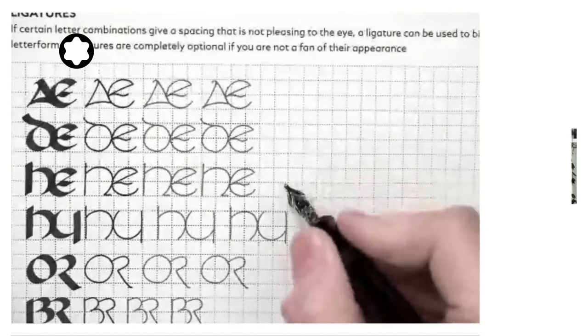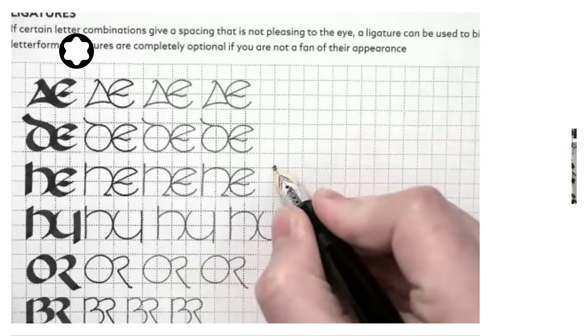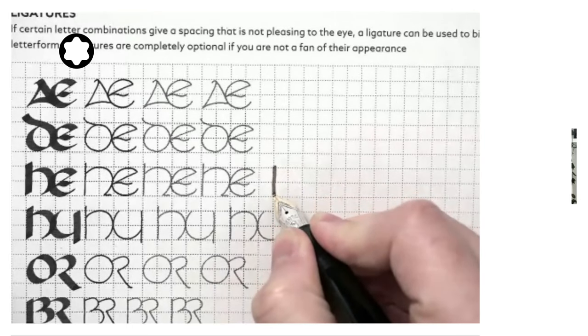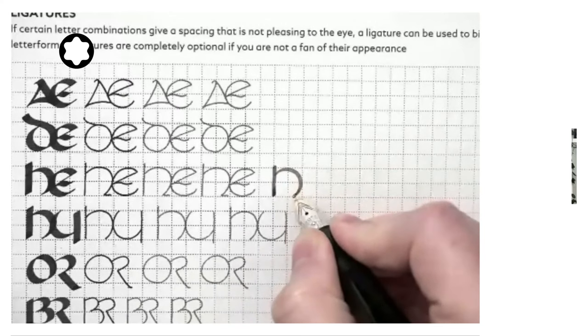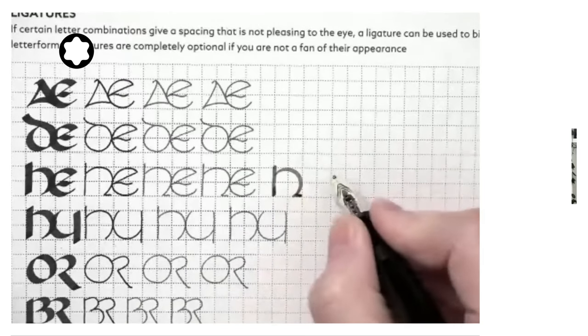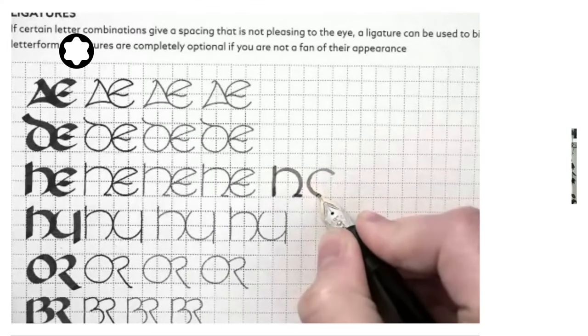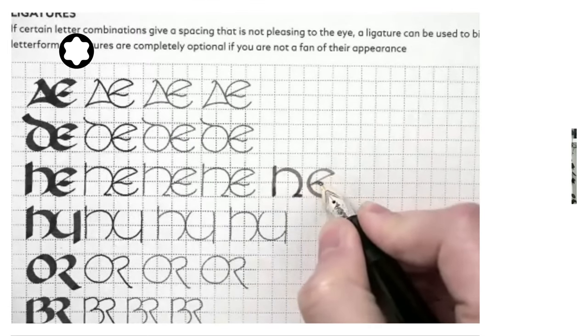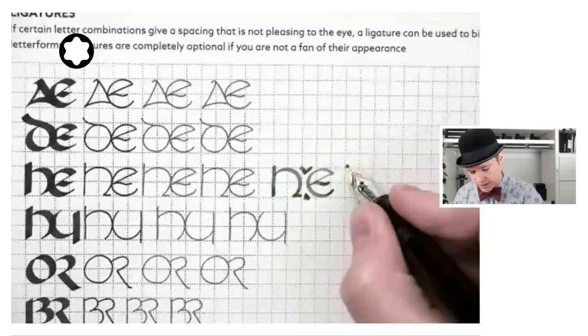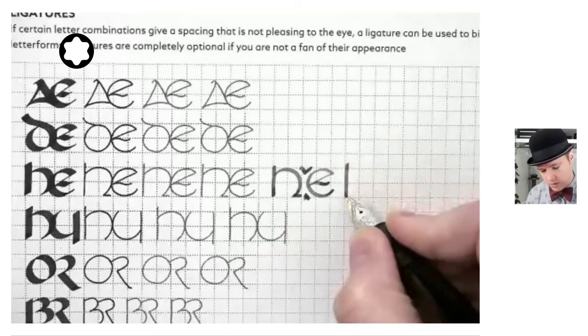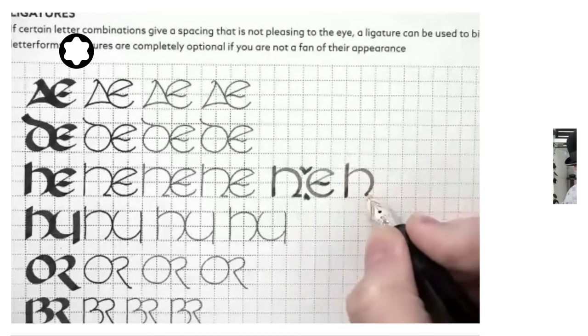So we're going to do that H and E first. We start with our straight down stroke and we come back up here. We have our circular form. Now, if I don't do the ligature version and I do an E, there's technically nothing wrong with that. We do our straight line down.